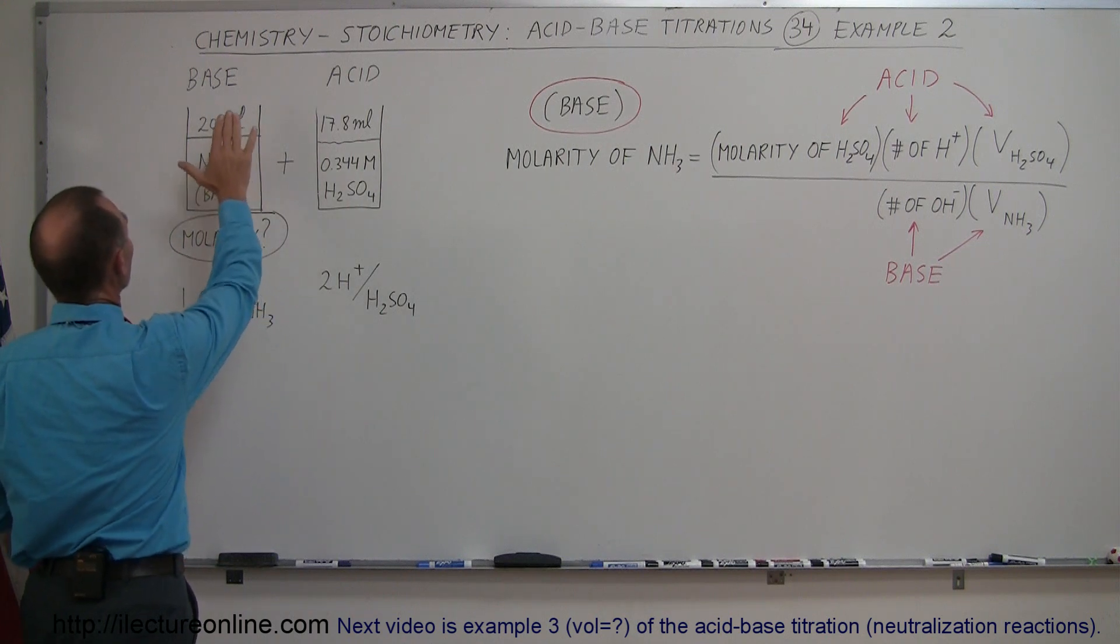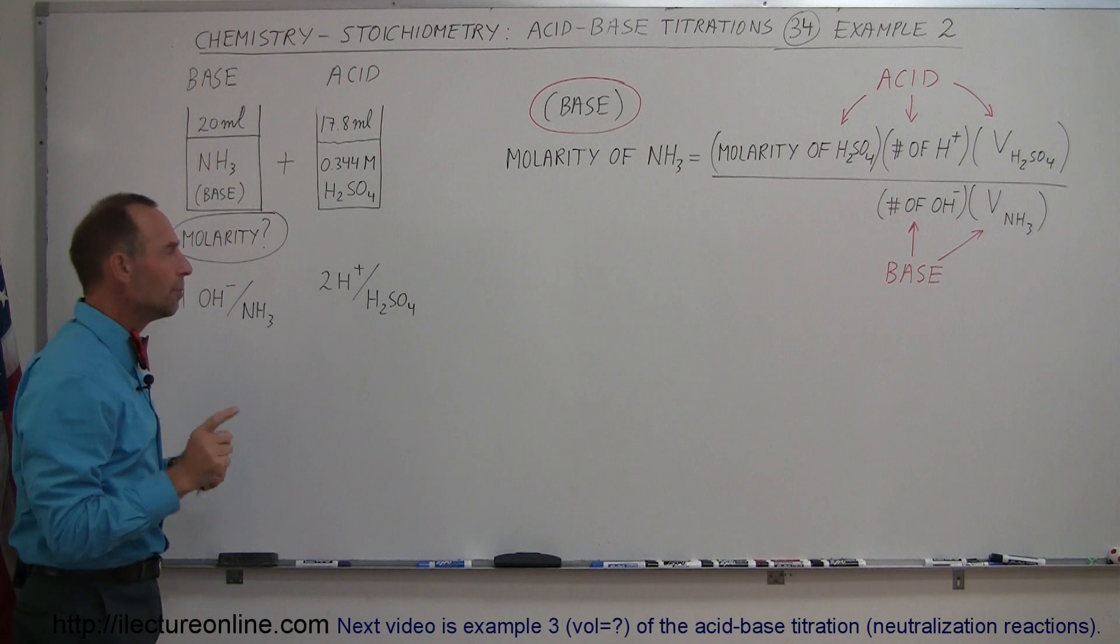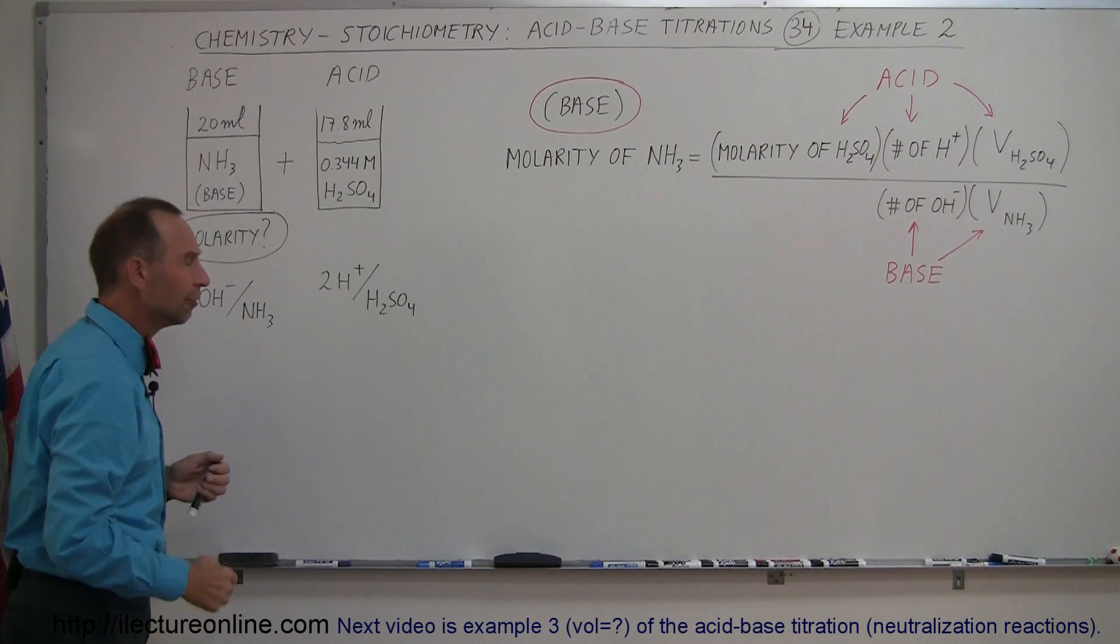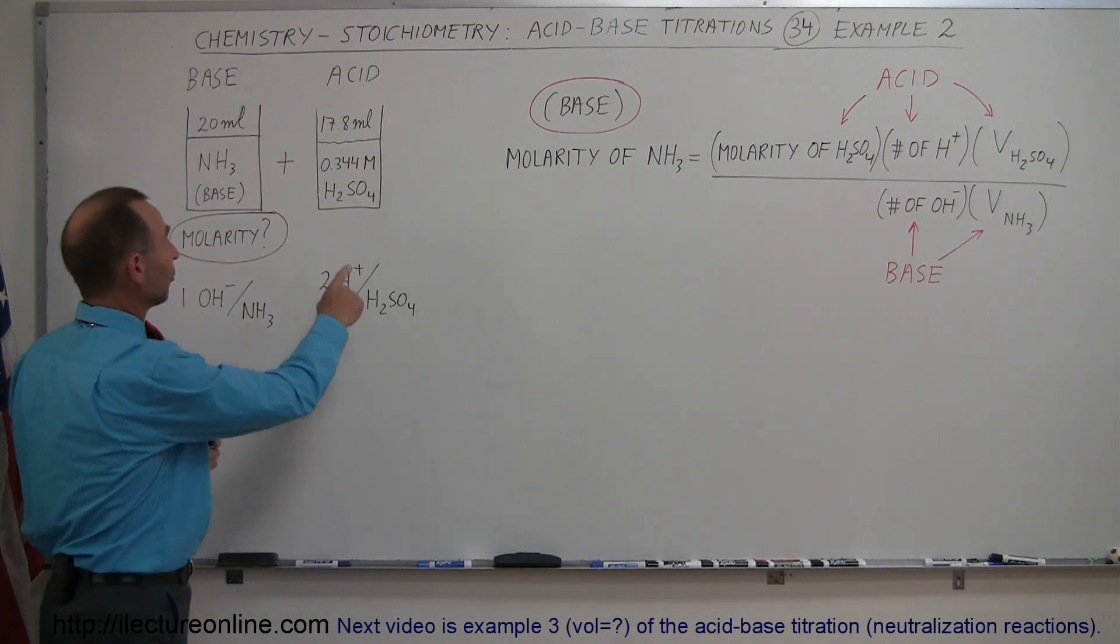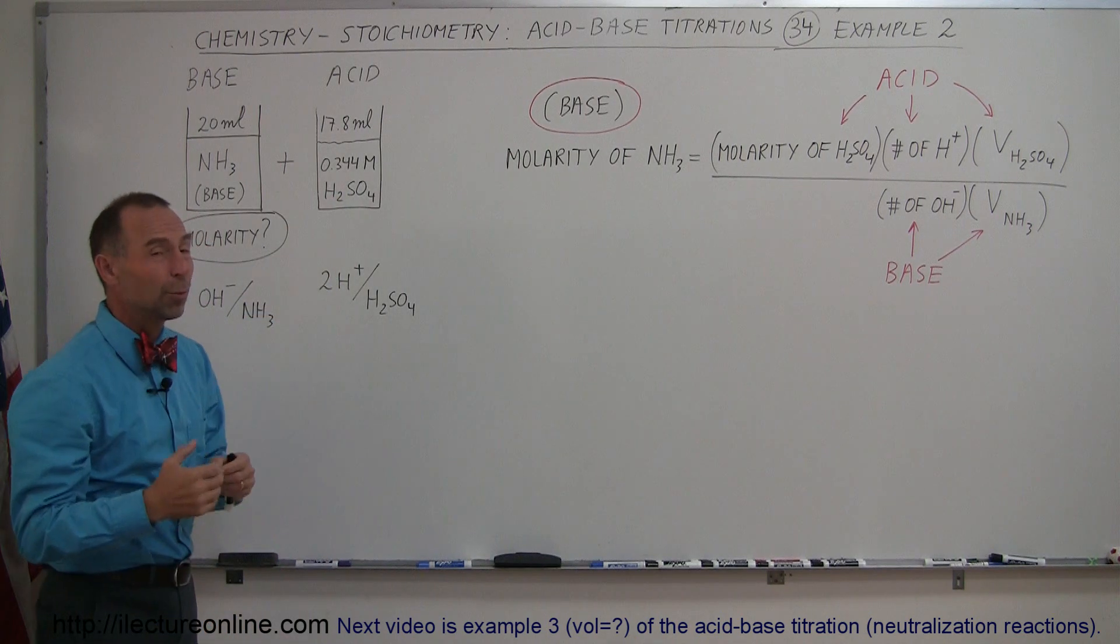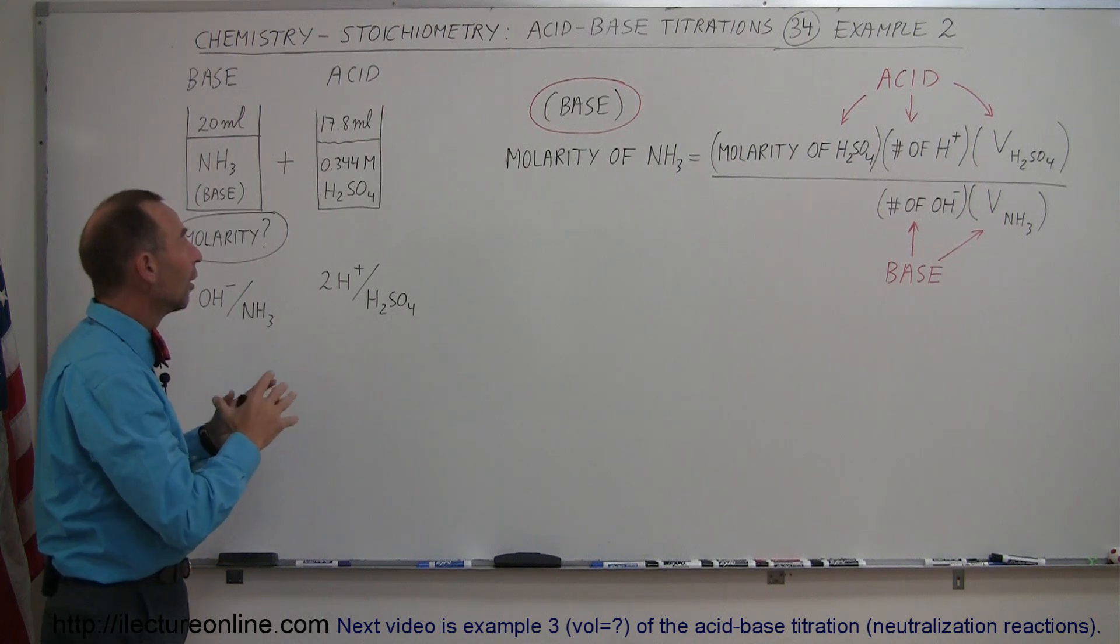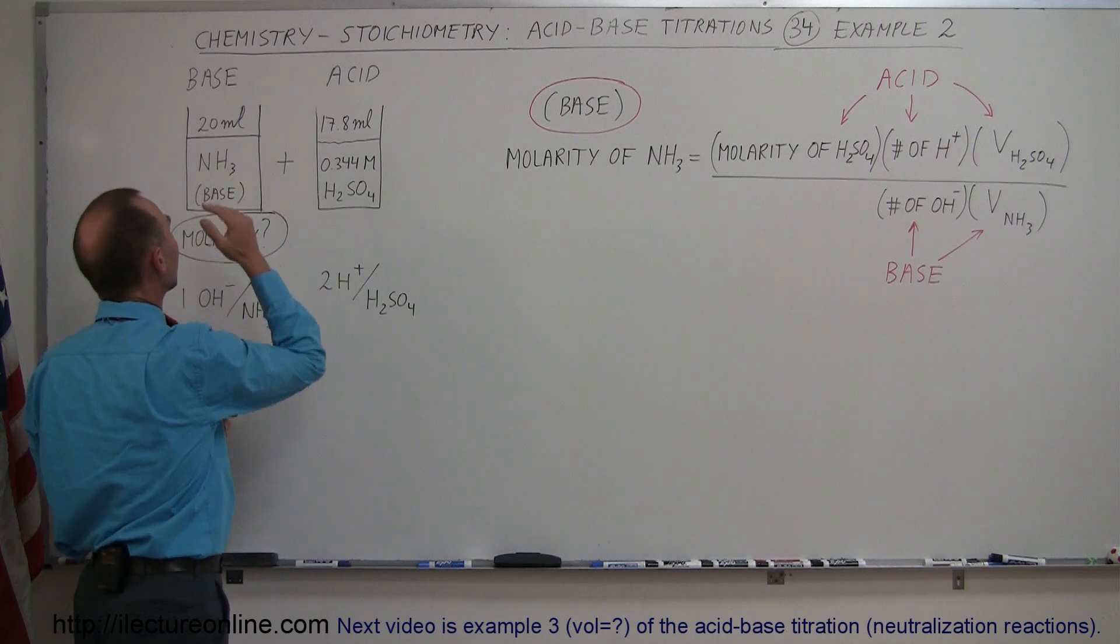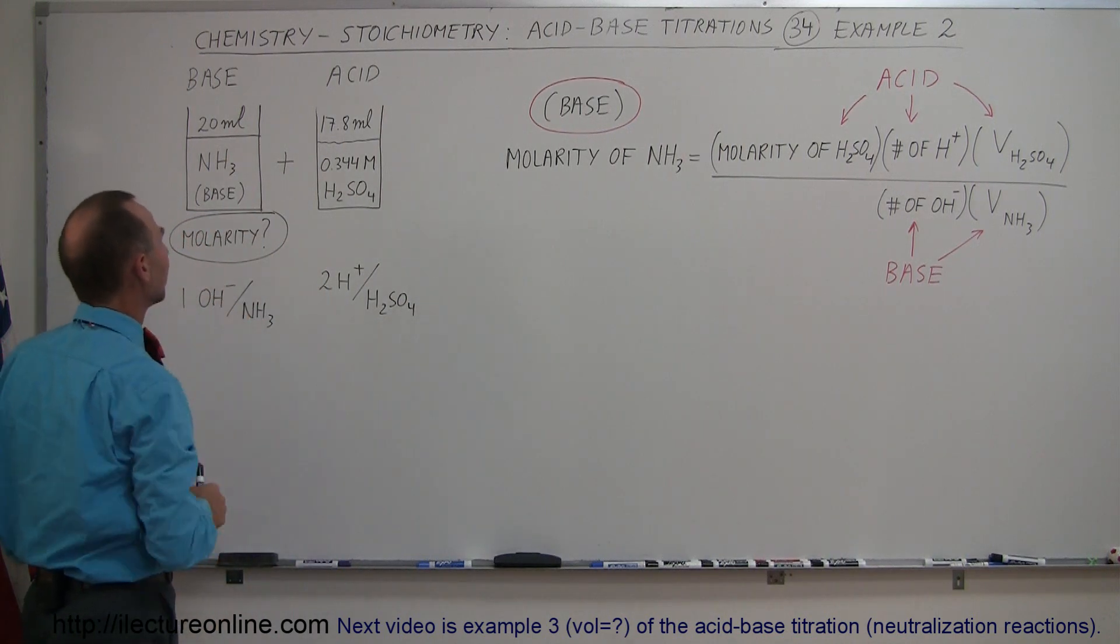So in this example, we have an unknown base. We have 20 milliliters of ammonia, but we don't know what the molarity is. Ammonia will put out one hydroxide ion for every atom of ammonia. We have a known acid, meaning we know the molarity of this acid. This is sulfuric acid, and the molarity is 0.344, which means there's 0.344 moles of the acid per liter of solution. And we have 17.8 milliliters that we needed in order to neutralize this unknown quantity of the base, or I should say the unknown molarity of the base.